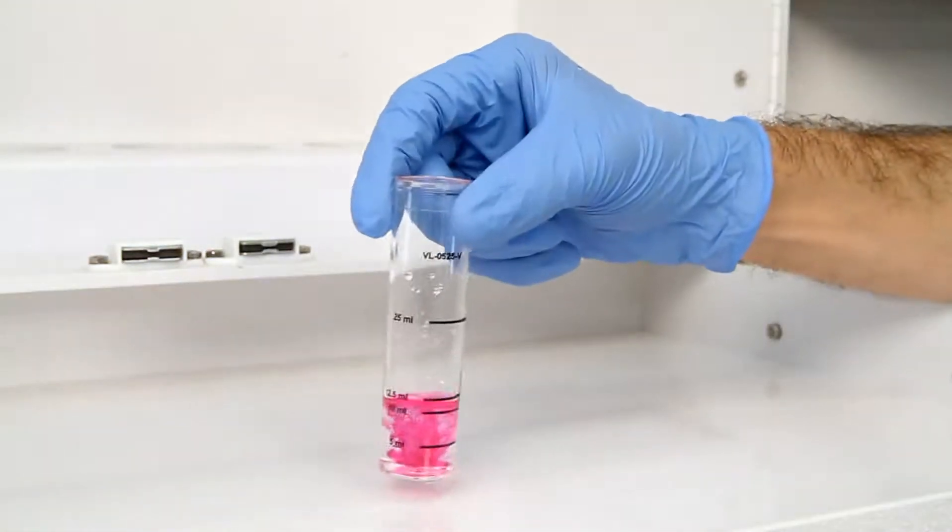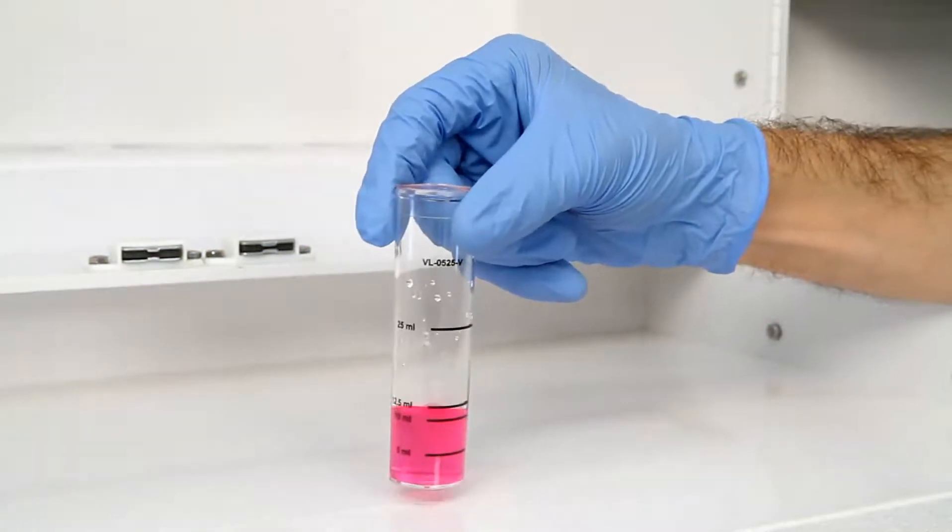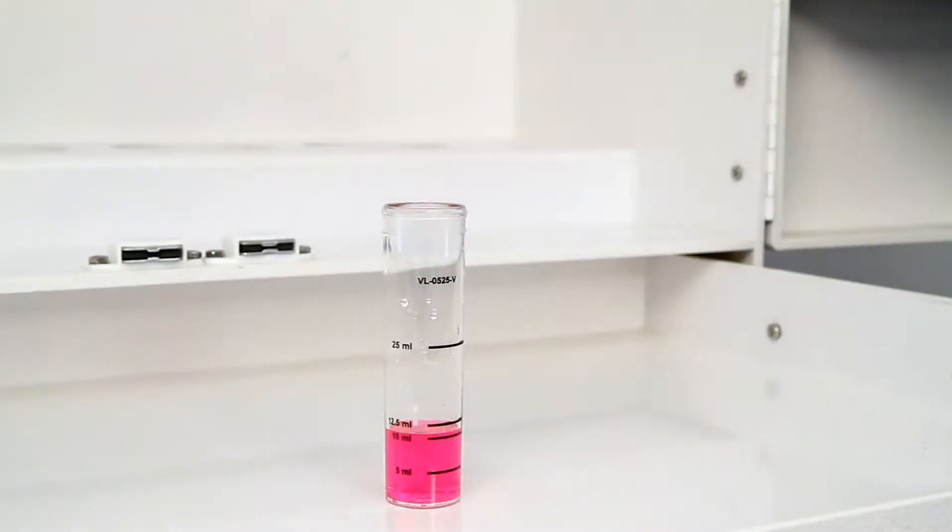After the addition of each reagent, it's important to swirl the vial to make sure the reagents are properly mixed. In this example, the sample should turn red.